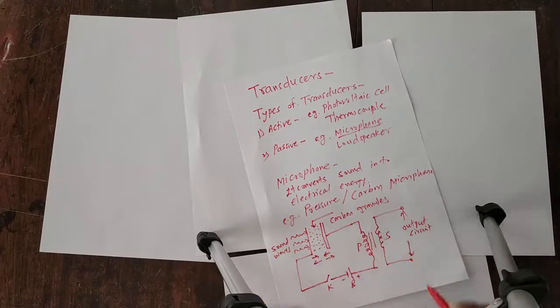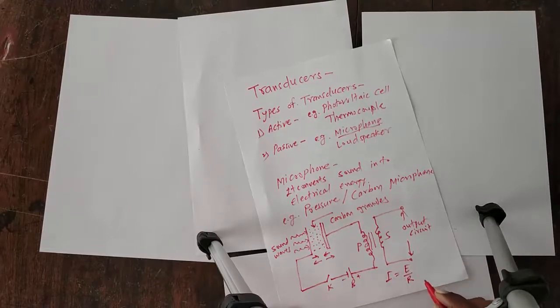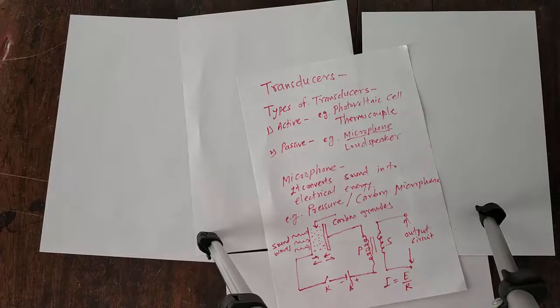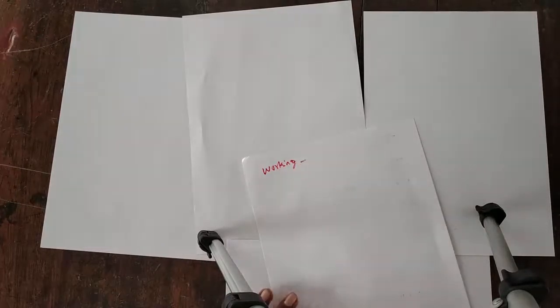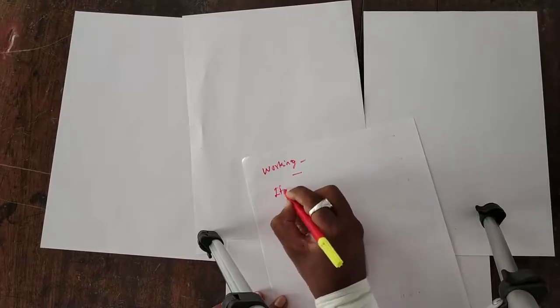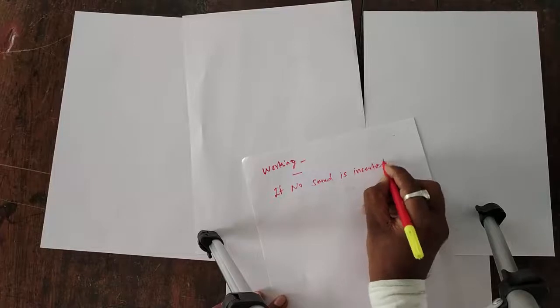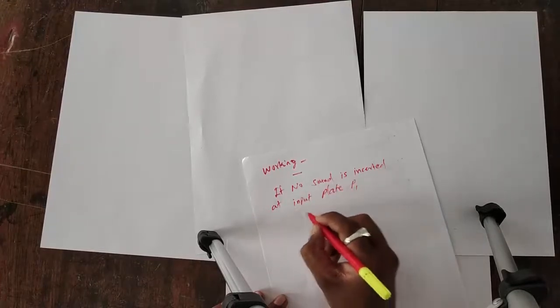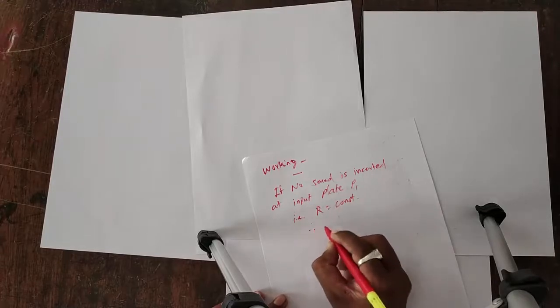In this circuit, the current I is equal to the EMF in the circuit divided by the resistance. This current is constant if the distance between two plates is constant. Now, in the working of carbon microphone, if no sound is inserted on plate P1, then the current I is equal to E by R. The resistance of the circuit is constant. Therefore, current I is equal to E by R.